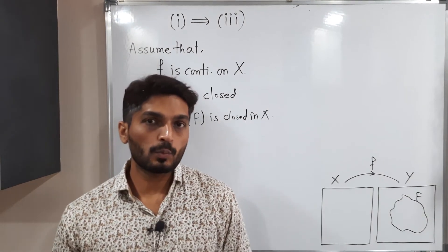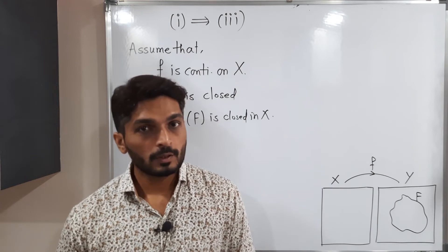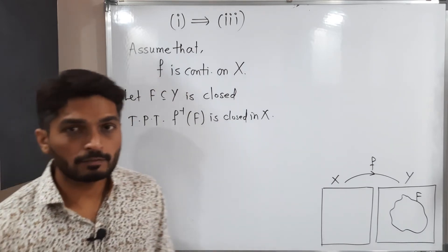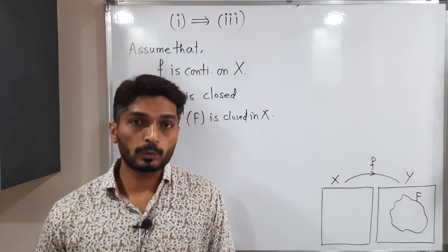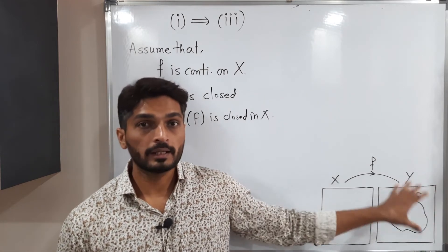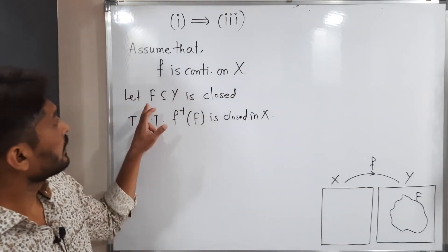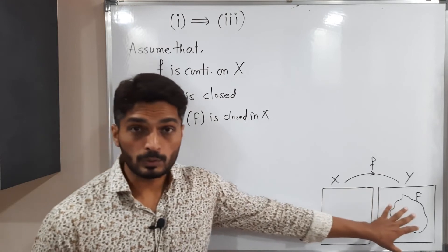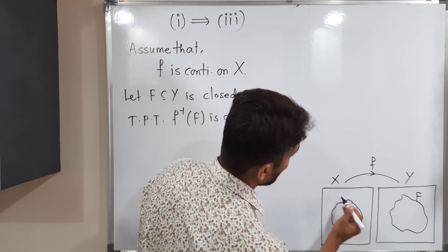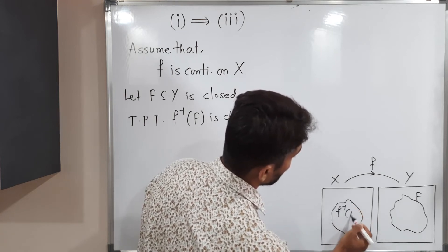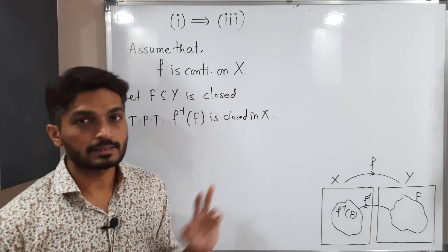Let us discuss now 1 implies 3. We are assuming that f is continuous on X, and we have to prove that if we have any closed set F in Y, then f inverse of F is also closed in X. So let F be a subset of Y which is closed, and we have to prove that f inverse of F is closed in X.